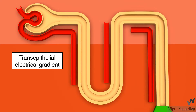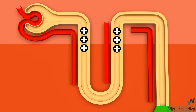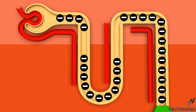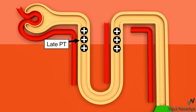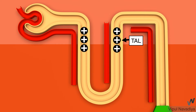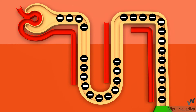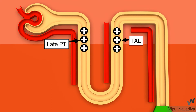Here is a tip on transepithelial electrical gradient throughout the nephron. The inside of the lumen is positive with respect to the interstitium at only two sites: the later part of the proximal tubule and the thick ascending limb. The late proximal tubule is electropositive because negatively charged chloride is reabsorbed more than positively charged sodium. The thick ascending limb is electropositive due to diffusion of positively charged potassium from the cell into the lumen and diffusion of negatively charged chloride from the cell into the interstitium. The rest of the nephron has a lumen-negative transepithelial electrical gradient due to active reabsorption of positively charged sodium.